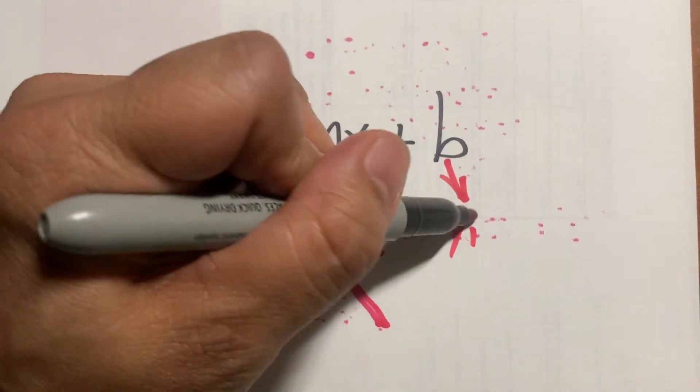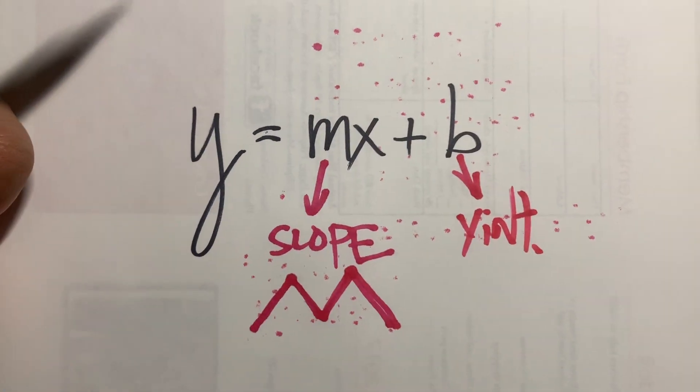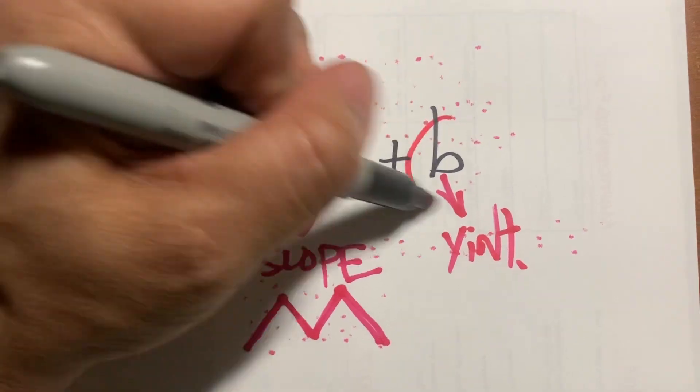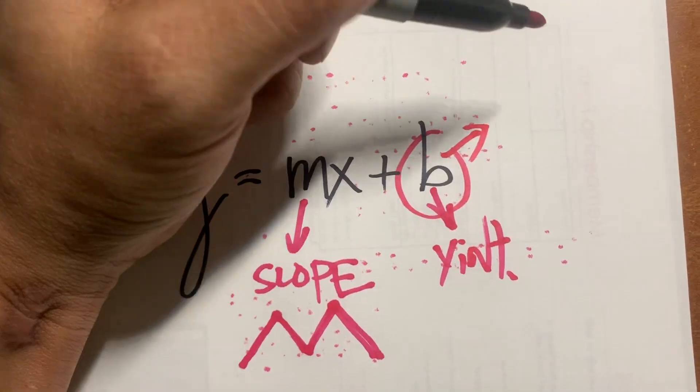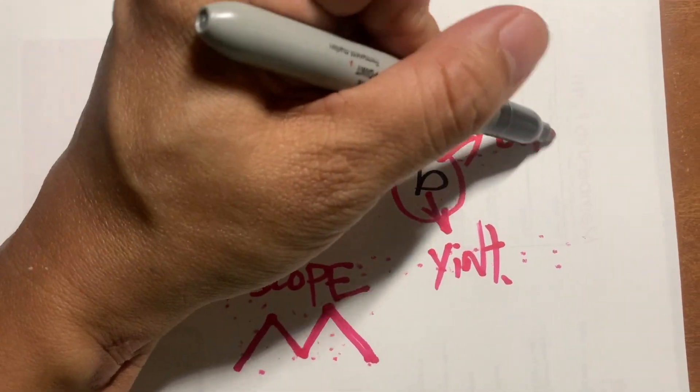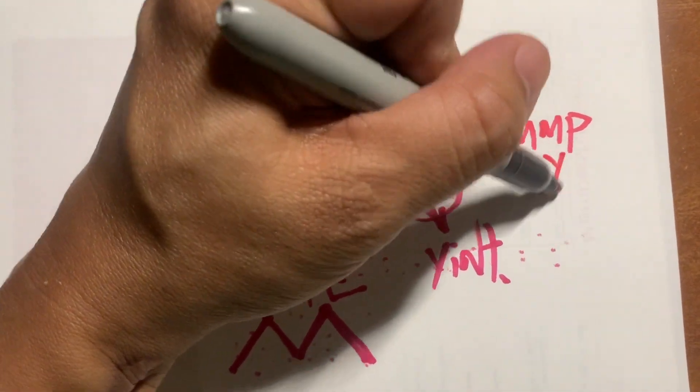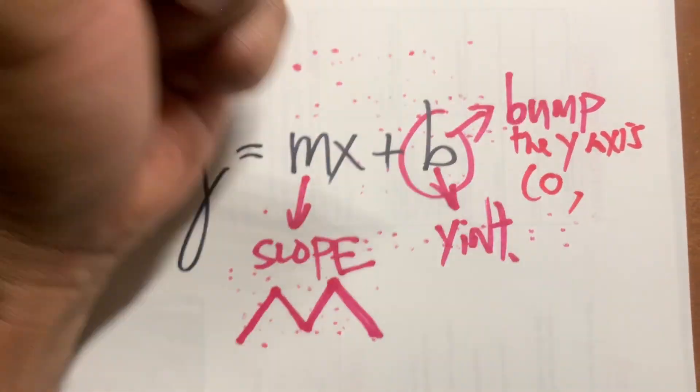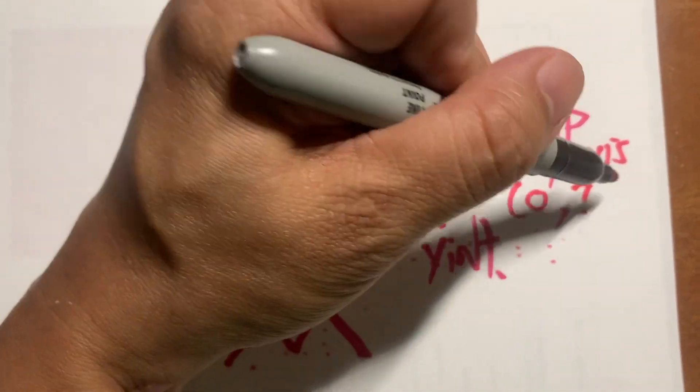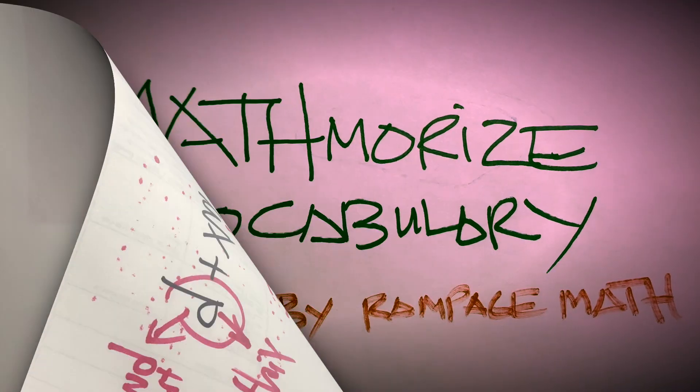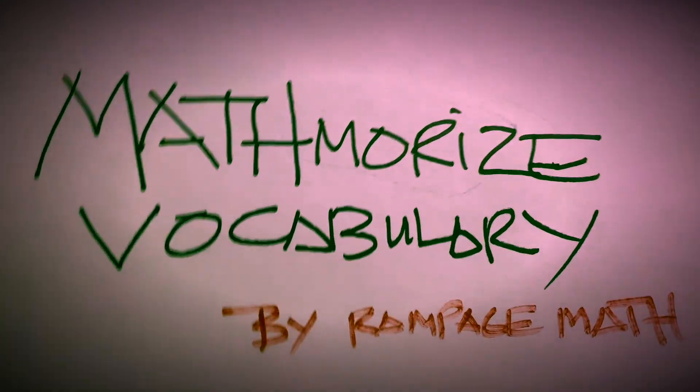B is the Y-intercept. Y-intercept. Why is it letter B? Because it is where the line will bump. Bump the Y-axis. The Y-axis. It is where X is equal to 0 and that is the Y-intercept. Math vocabulary made easy.